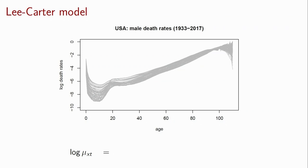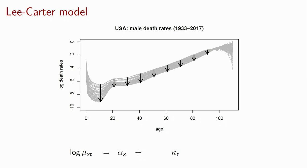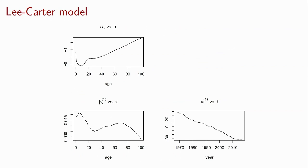What the Lee-Carter model wants to do is model this process. If we take the log force of mortality or the log central death rate, we say there's an alpha_x term that captures how mortality evolves with age — the fixed age behavior. We add a time trend kappa_t that captures the decline. But since the improvement rates differ by age, we have beta_x, which captures how improvement varies across ages. You get an alpha_x showing the general shape, a kappa_t that is declining, and a beta_x showing different ages improving at different rates. For the U.S. data, from 2010 this has been slowing down, and you see peak improvements at younger ages and around age 70.